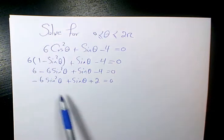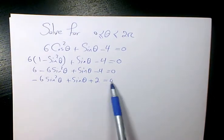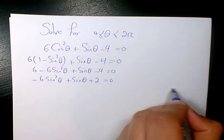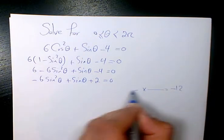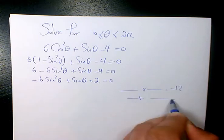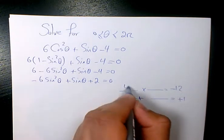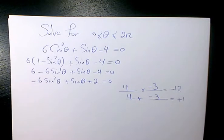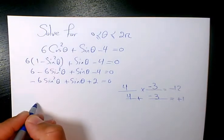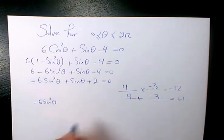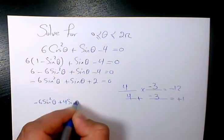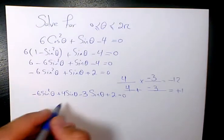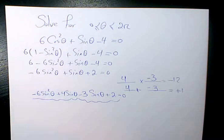Now I have to use the AC method to solve this quadratic equation. AC method: negative 6 times 2 is going to be negative 12. We need two numbers that multiply to negative 12 and add to positive 1 — that's 4 times negative 3, which gives negative 12, and 4 plus negative 3 gives plus 1. So instead of sine theta, I put 4 sine theta minus 3 sine theta plus 2 equals to 0.